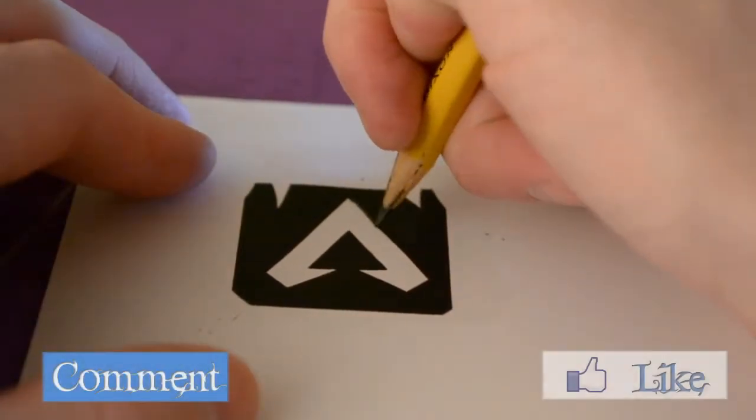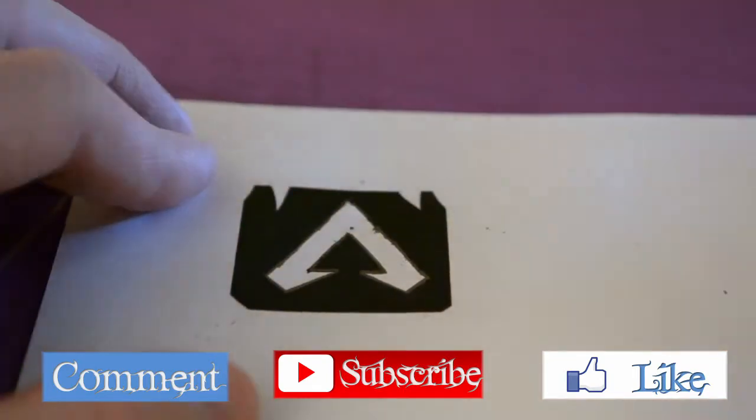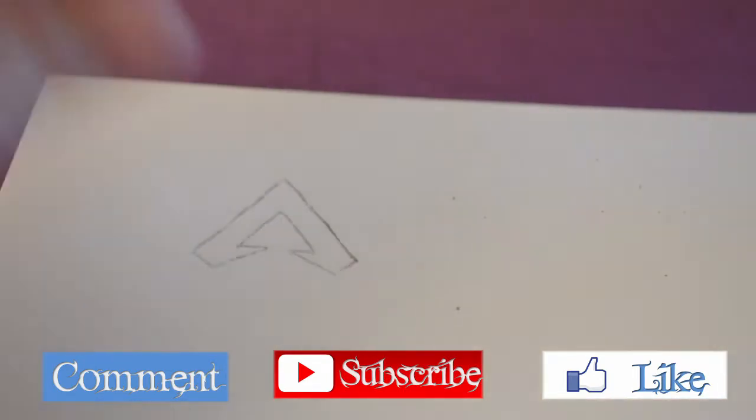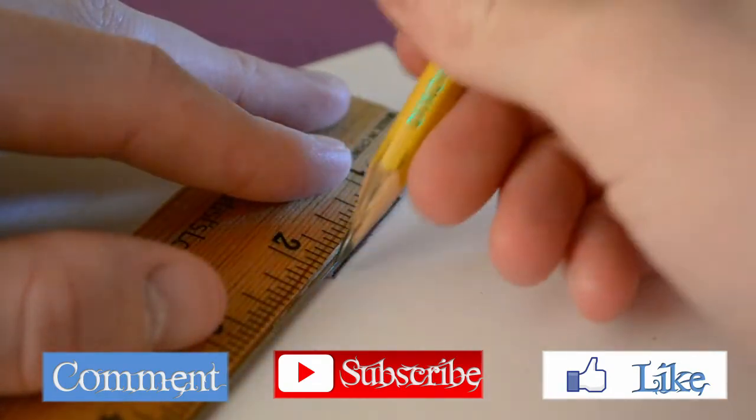I began by tracing the Apex A logo onto a piece of cardstock paper. I darkened it and straightened the lines of the stencil before I cut it out.